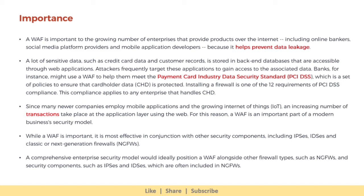Attackers frequently target these applications to gain access to the associated data. Banks, for instance, might use a WAF to help them meet the Payment Card Industry Data Security Standard (PCI-DSS), which is a set of policies to ensure that cardholder data is protected. Installing a firewall is one of the 12 requirements of PCI-DSS compliance, which applies to any enterprise that handles cardholder data. Since many newer companies employ mobile applications and the growing Internet of Things, an increasing number of transactions take place at the application layer. For this reason, a WAF is an important part of a modern business's security model, and is most effective in conjunction with other security components including IPS, IDS, and classic or next-generation firewalls.